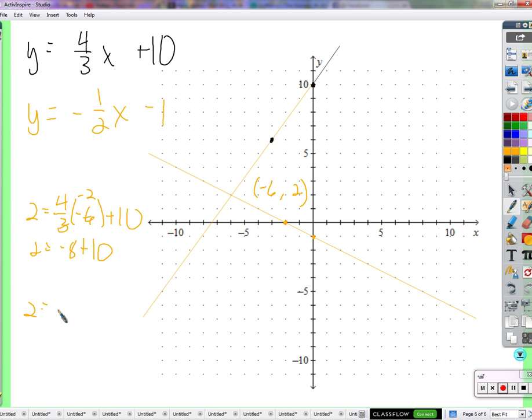And the other one, two should equal negative one-half times negative six minus one. Negative three minus one is two. It does work.